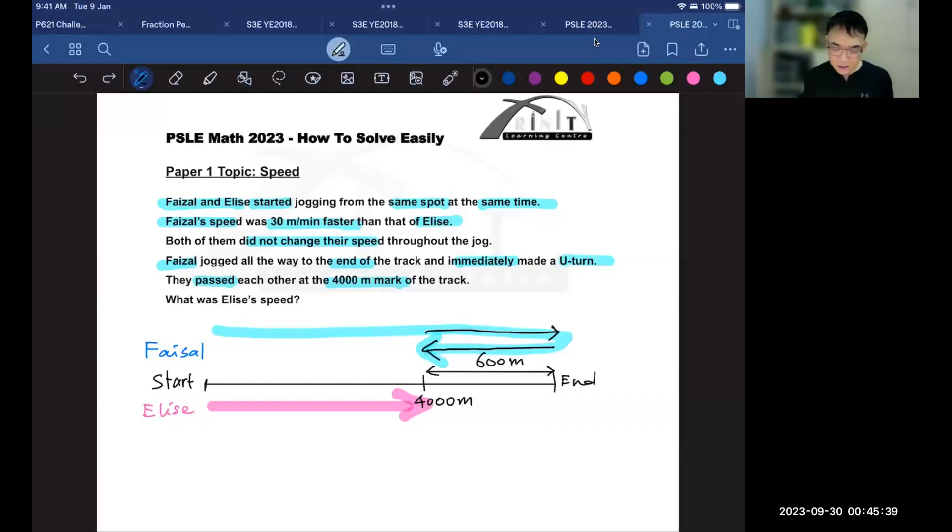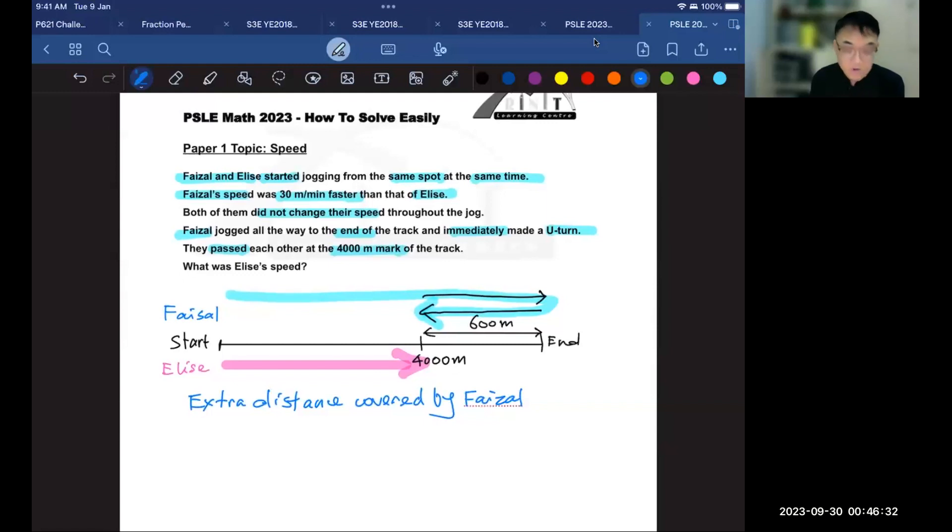The answer is that he was traveling faster. Remember that he's able to travel an extra 30 meters per minute. So all we need to know now is how much extra distance he traveled, and we will know how long he took to travel that extra distance. So now let's find the difference in the distance, which is this portion. To find the extra distance covered by Faisal, all we have to do is find the two black lines here.